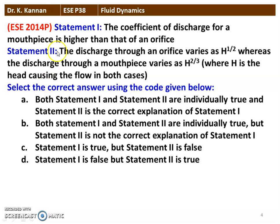The next question is from the 2014 question paper. There are two statements. Statement 1: The coefficient of discharge for a mouthpiece is higher than that of an orifice meter. Statement 2: The discharge through the orifice varies as H to the power 1/2, whereas the discharge through the mouthpiece varies as H to the power 2/3, where H is the head causing the flow in both cases. Statement 1 is true, but statement 2 is false.